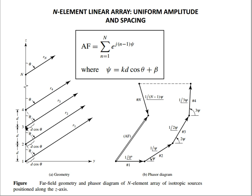If you vary beta, you will get two types of arrays. The first one is the broadside array, for which your beta is zero, meaning the phase difference between each element is zero. For the end-fire array, your beta is plus or minus kd. The array factor for this type of array is equal to the summation from n equals 1 to N of e raised to j(n-1)·psi, where psi equals kd·cosθ + beta.